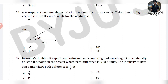Look at the first question: A transparent medium shows a relation between I and R as shown. If the speed of light in the vacuum is C, then the Brewster's angle of the medium is? To solve this, we use Snell's formula — it is the Brewster's formula.